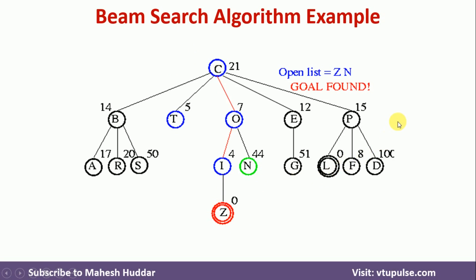If you have hill climbing, we may not end up with the goal node. Beam search is in between hill climbing and the best first search algorithm.